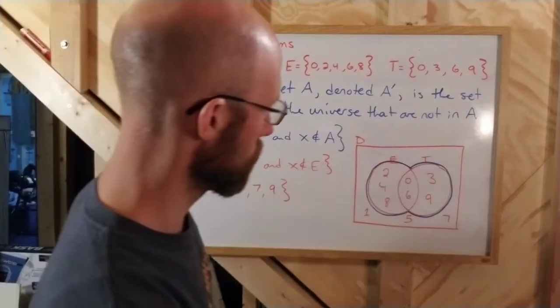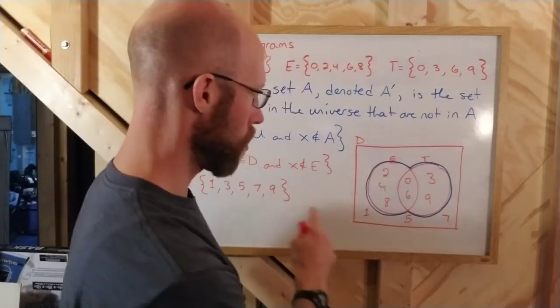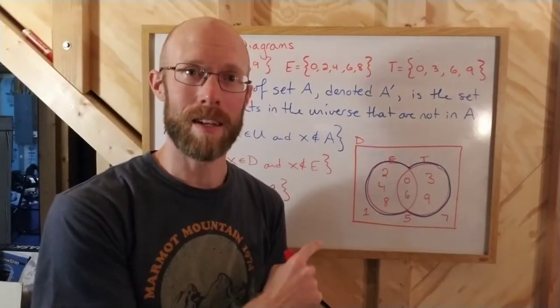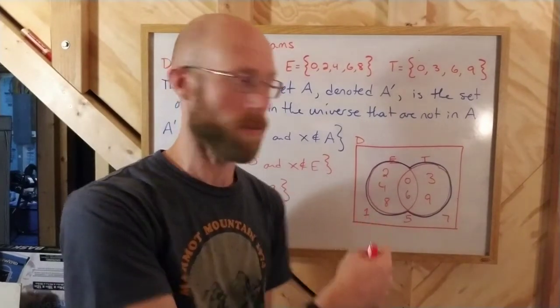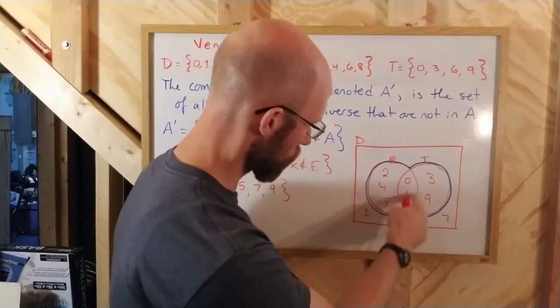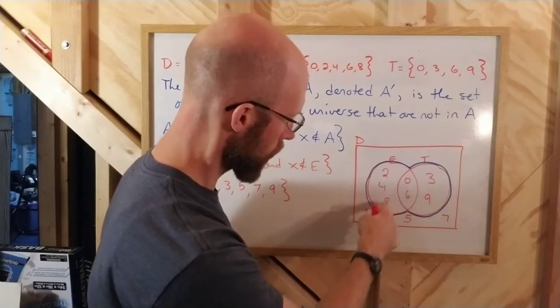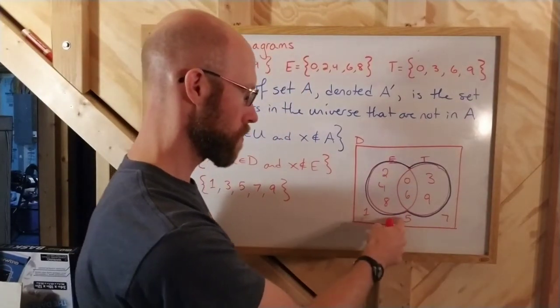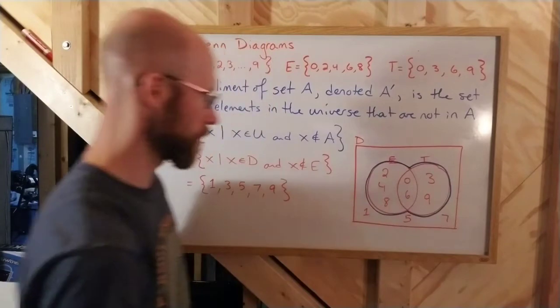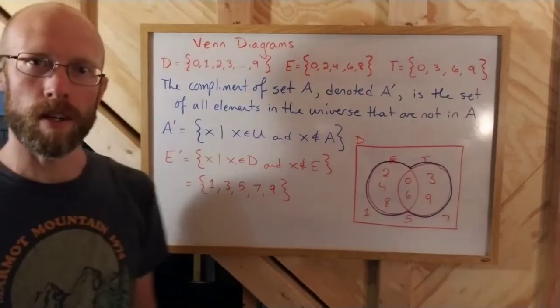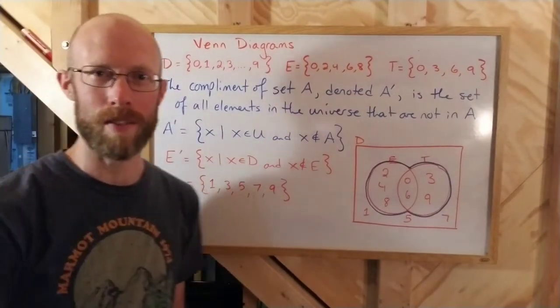And on this Venn diagram, it's all the elements that are not in the E circle. So here's E's circle with 0, 6, 2, 4, 8. So anything that's not in that circle is 1, 5, 7, 3, and 9, which are in a different order from what I have listed here.